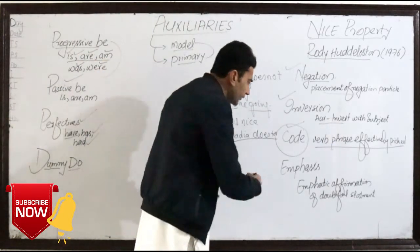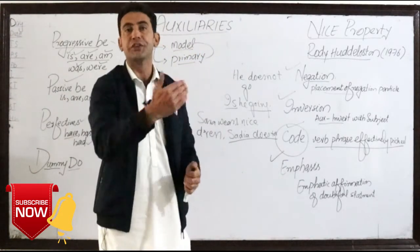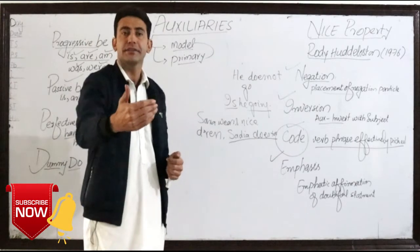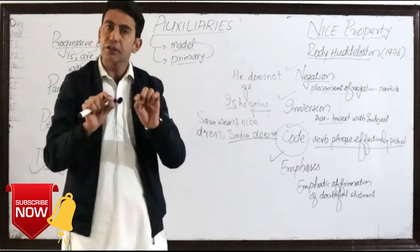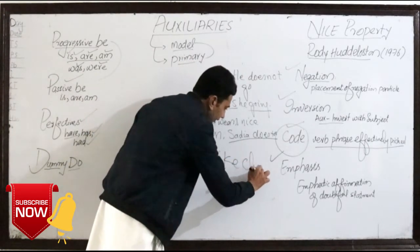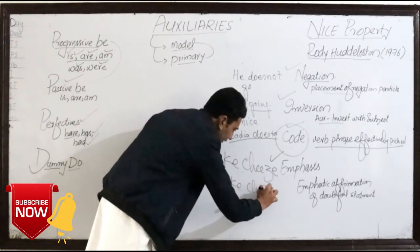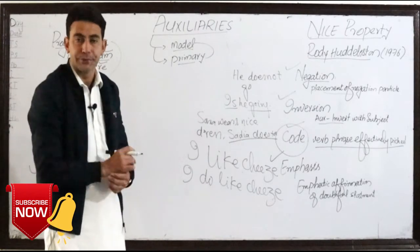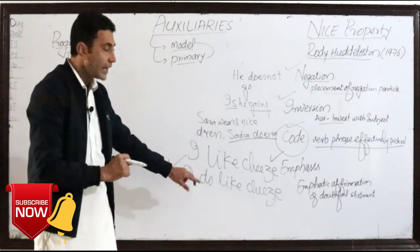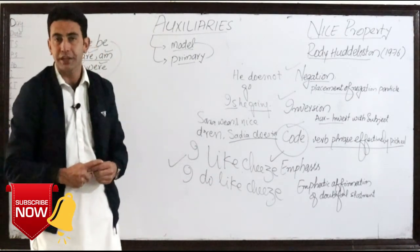The last property is emphasis. Auxiliaries are also used for emphatic affirmation of a doubtful statement. If we want to emphasize, we can use an auxiliary. For example, compare 'I like cheese' with 'I do like cheese' — the emphasis is clearly visible in the second sentence, and it is all because of the auxiliary. So we use an auxiliary for the purpose of emphasis. That is all for today — thank you and stay blessed.